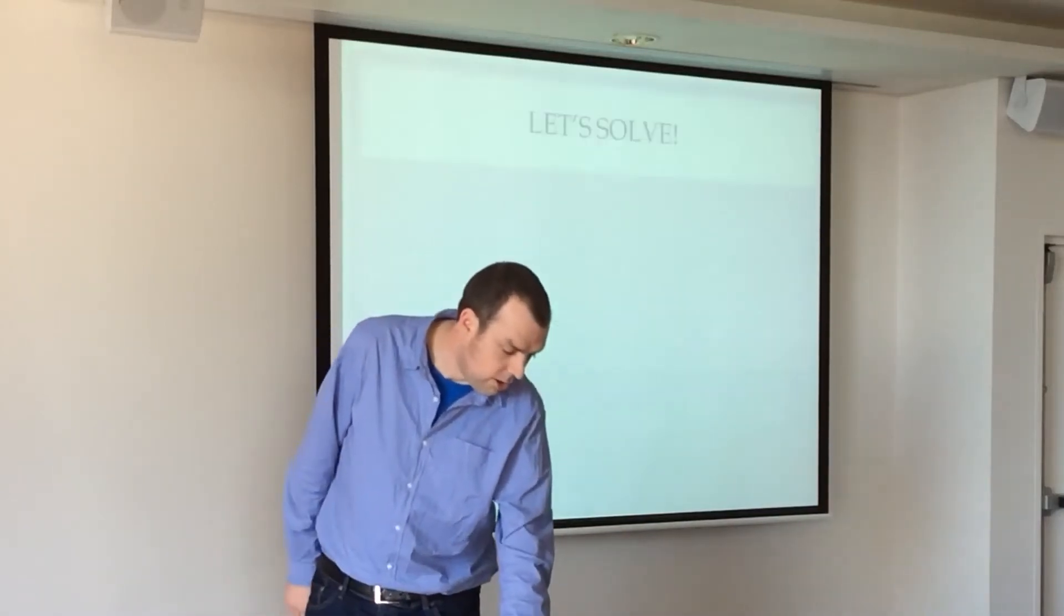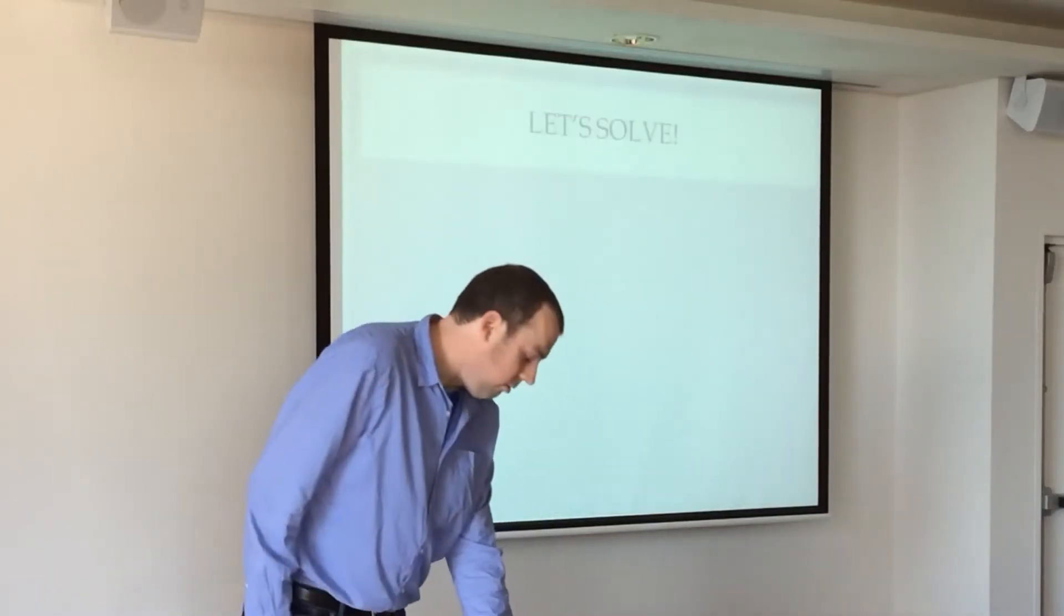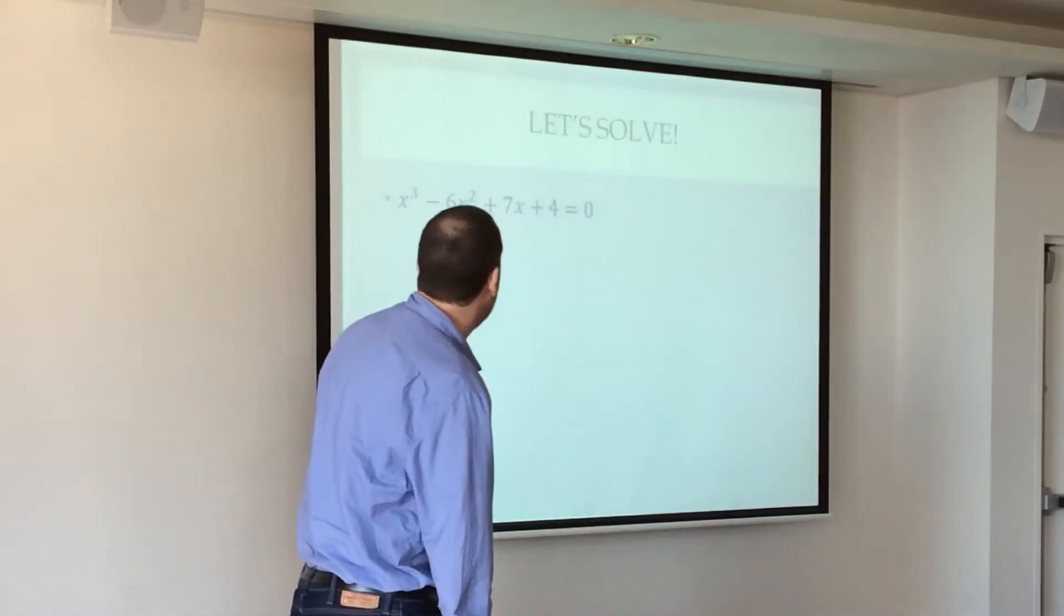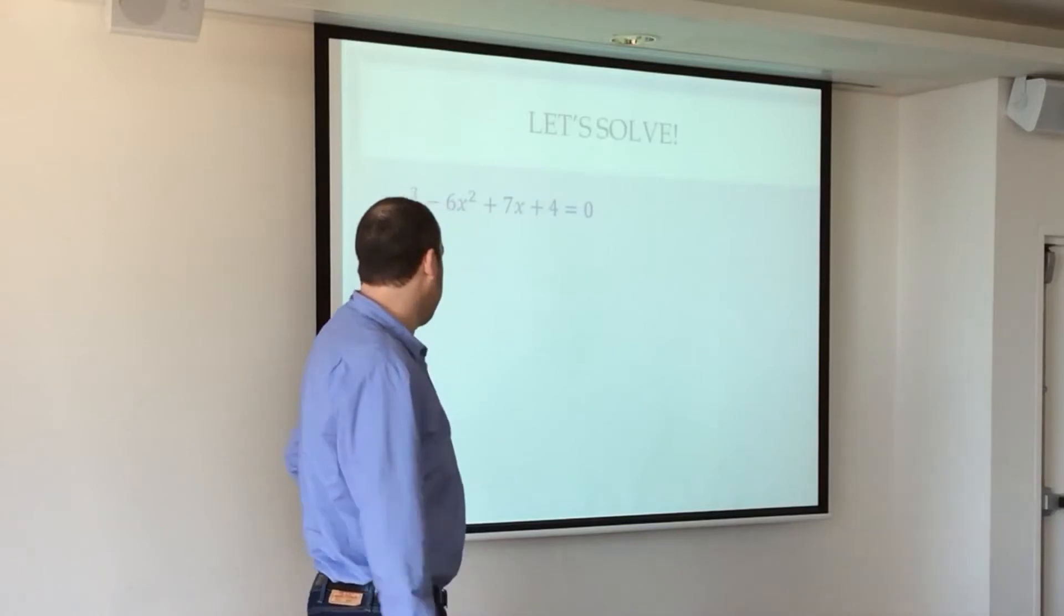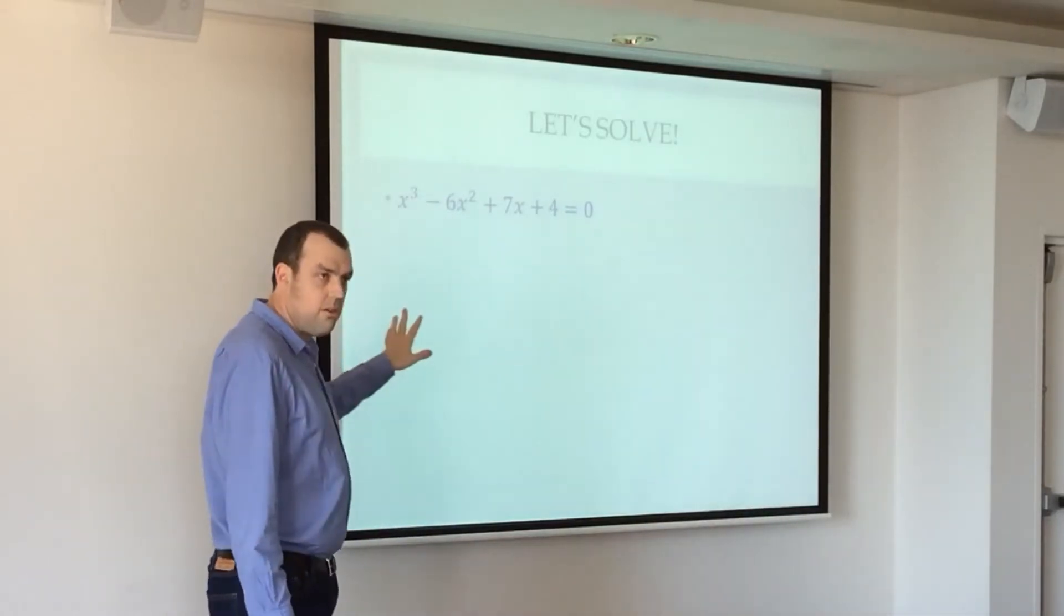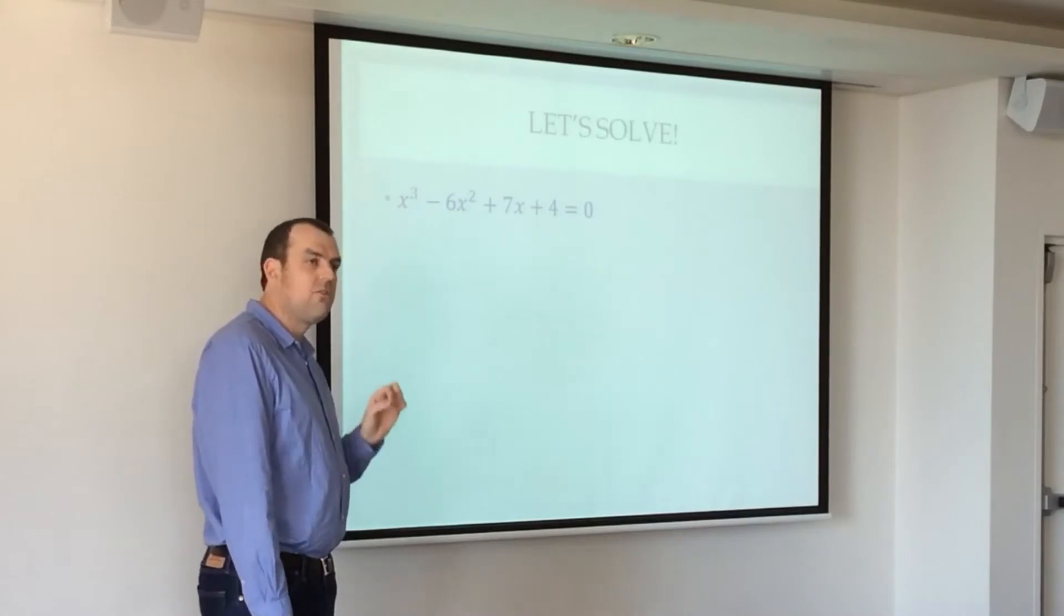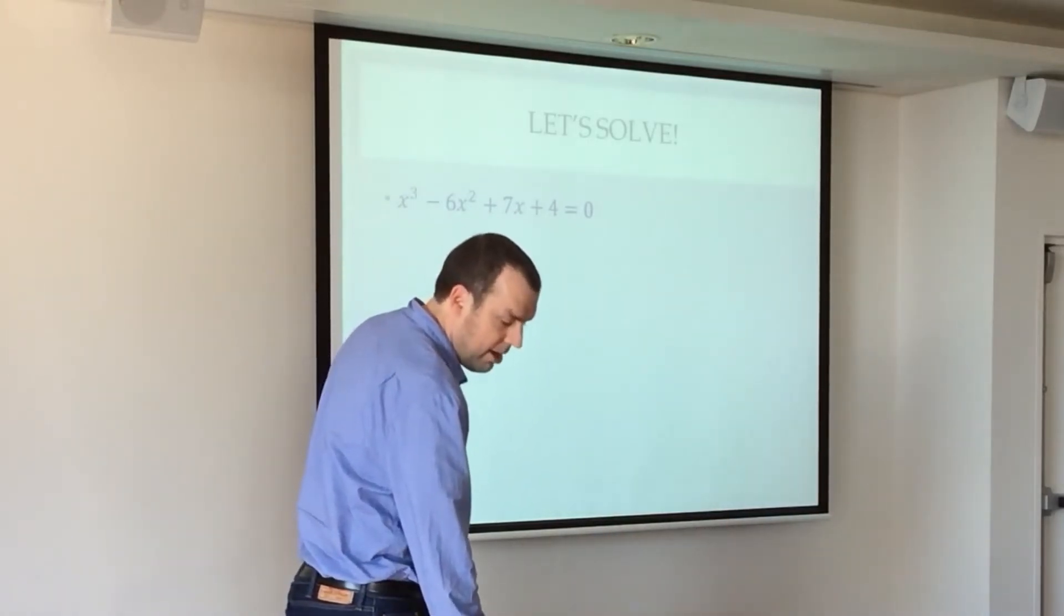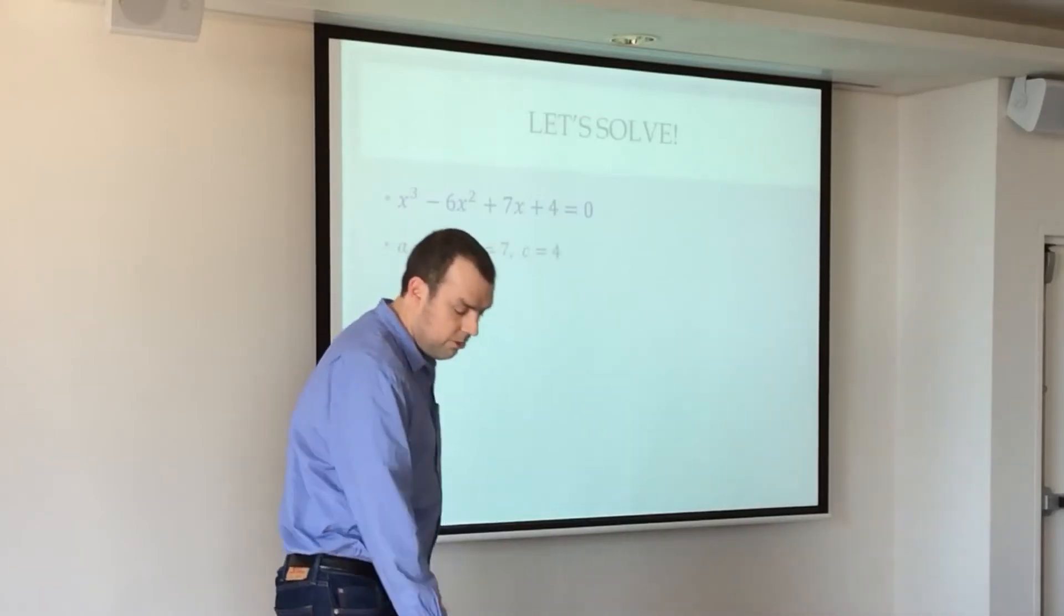Okay, let's get into cubics. So we're going to solve this. x cubed minus 6x squared plus 7x plus 4 equals 0. I came up with this equation myself so that it would have nice numbers, and that took a lot of effort to do. You saw how complicated the formulas were, so making everything work. Difficult.